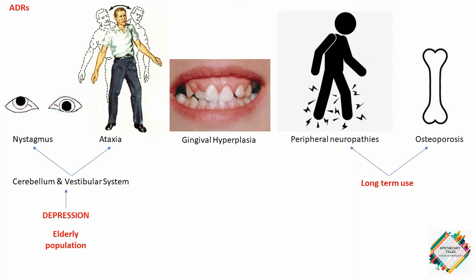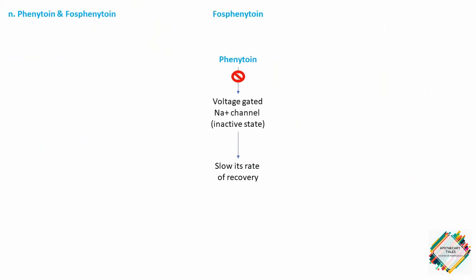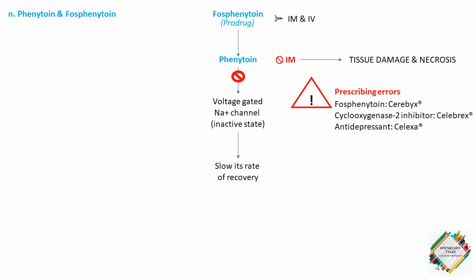When we talk about fosphenytoin, fosphenytoin is a prodrug that is rapidly converted to phenytoin in the blood within minutes. Fosphenytoin may be administered intramuscularly. Phenytoin sodium should never be given intramuscularly as it causes tissue damage and necrosis. Fosphenytoin is the drug of choice and standard of care for IV and IM administration of phenytoin. Because of sound-alike and look-alike trade names, there is a risk for prescribing errors. For instance, the trade name of fosphenytoin is Cerebyx, which is easily confused with Celebrex, the cyclooxygenase-2 inhibitor, as well as Celexa, the antidepressant.